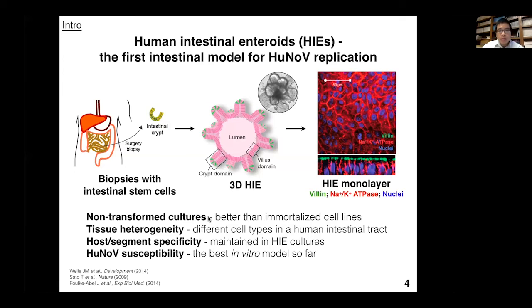Enteroids have several advantages. First, they are non-transformed cell culture, better than immortalized cancer cell lines like CaCo2 or 293T for studying normal cell functions. Second, they contain different cell types including enterocytes, enteroendocrine cells, goblet cells, and Paneth cells, recapitulating intestinal tissue composition. Third, they recapture host and segment specificity—the enteroid has the same genetic code as the donor patient, and if isolated from jejunum, duodenum, or ileum, it recaptures segment specificity. Most importantly, they are susceptible to human norovirus infection and remain the only and best in vitro model available.